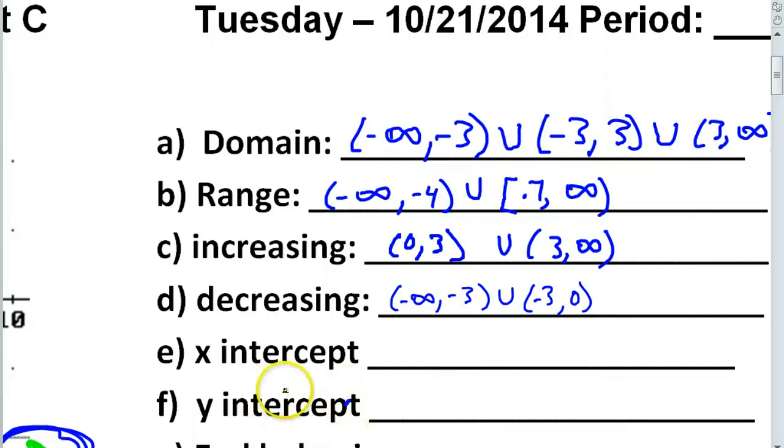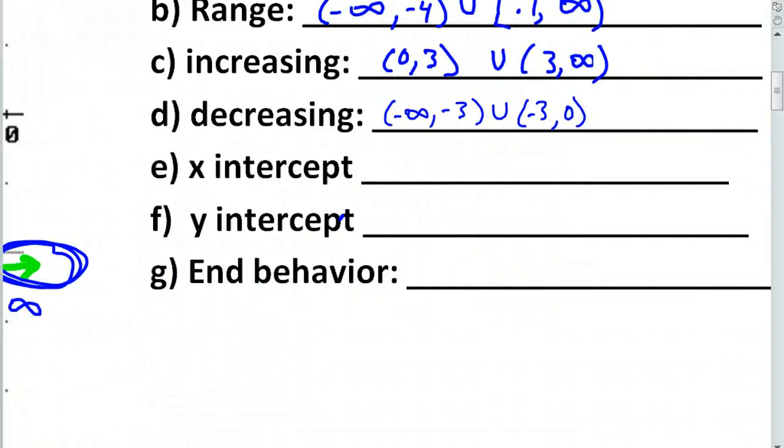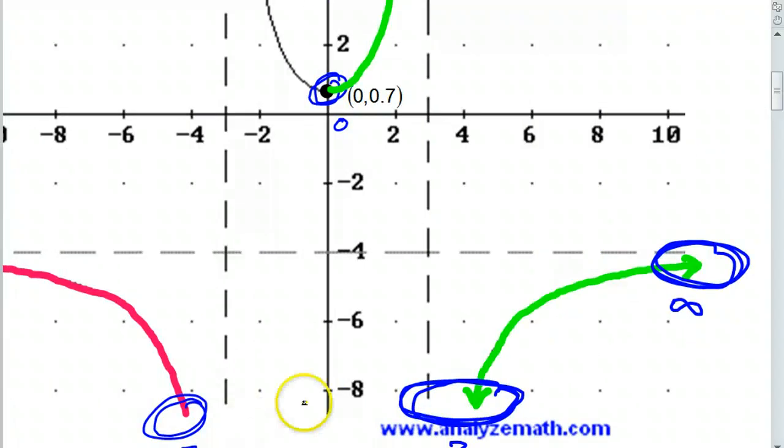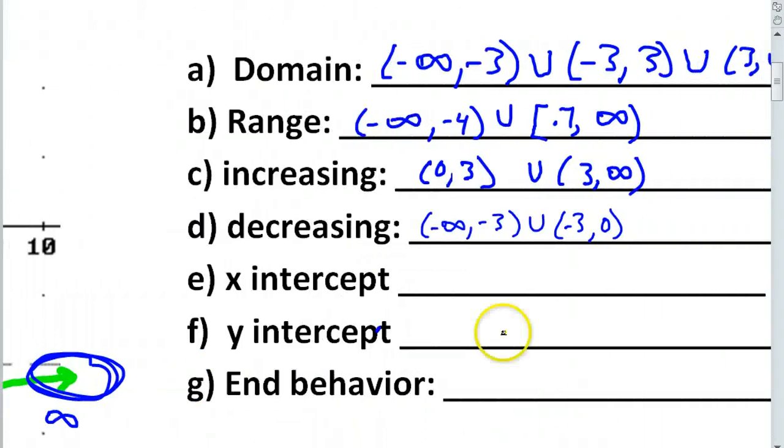All right. Now, we got the, okay. So, now we're supposed to say what's the x-intercept and the y-intercept. But, what do you think? What's the x-intercept? It's going to be none. Because it never crossed the board. Right. Right. Looking at the graph, it never does reach the x-axis. Okay. The upper branch doesn't touch the x-axis. The lower branches, they don't reach the x-axis. So, there is no x-intercept. So, we'll just put none.